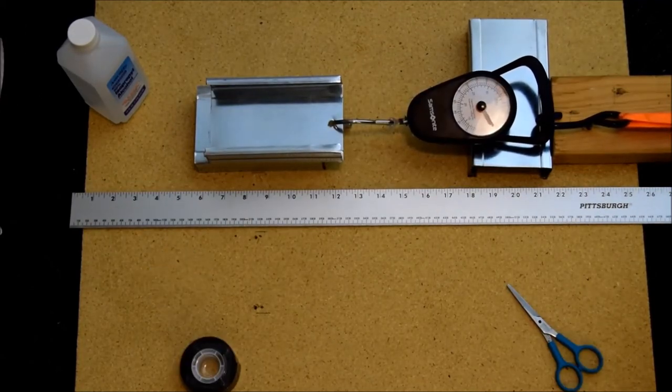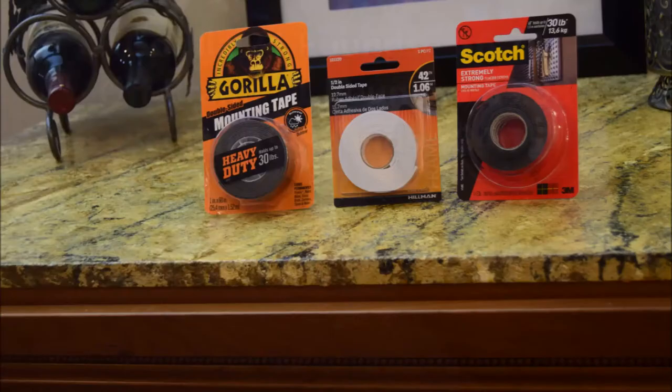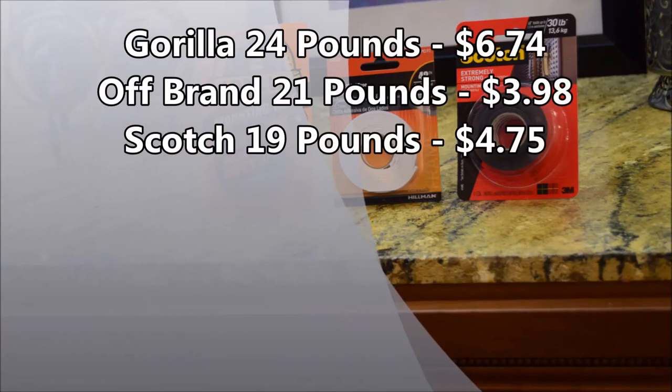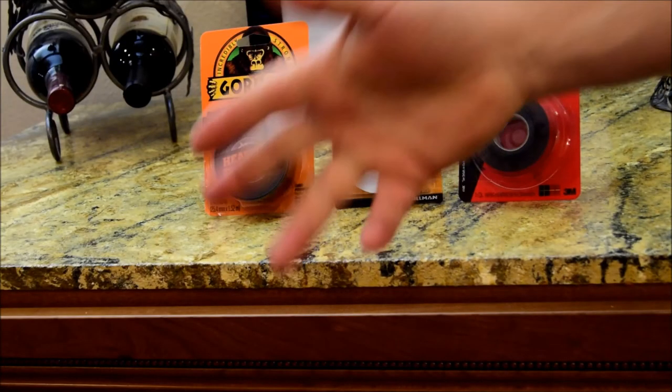Gorilla has the highest single result before failure at 27 pounds and the highest average at 24 pounds, but it was the most expensive as well. It cost $6.74 for the same size roll.